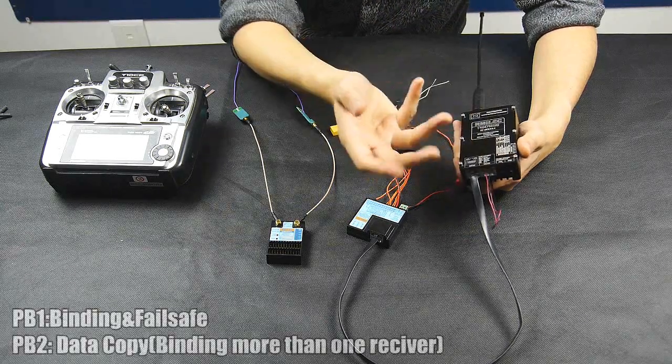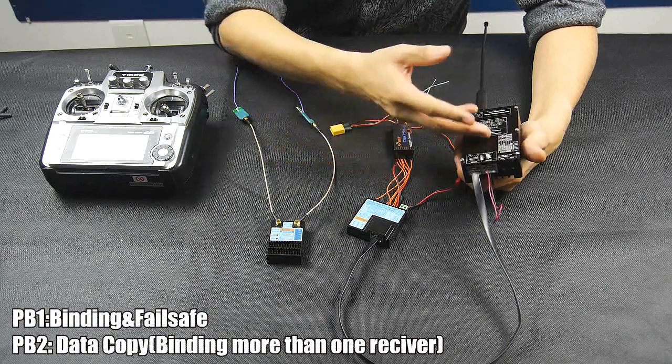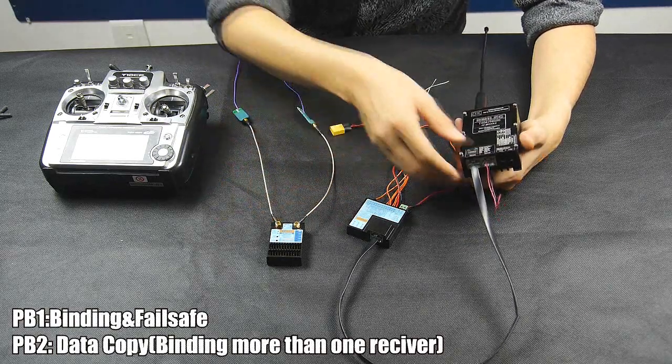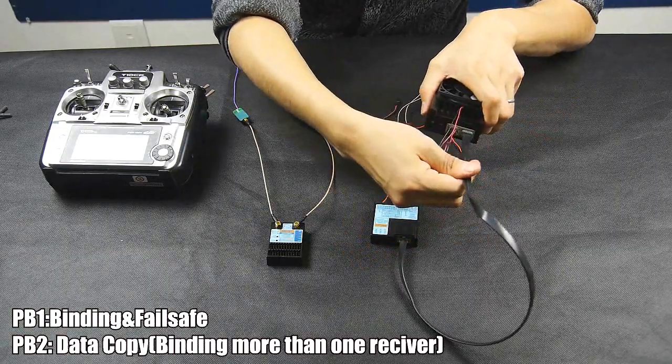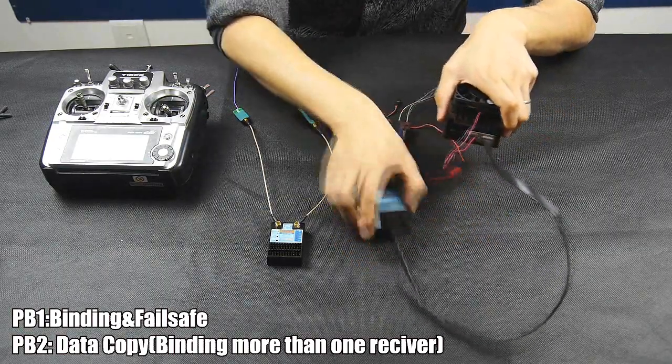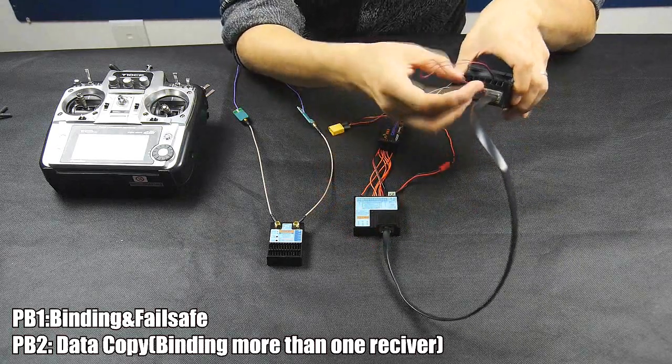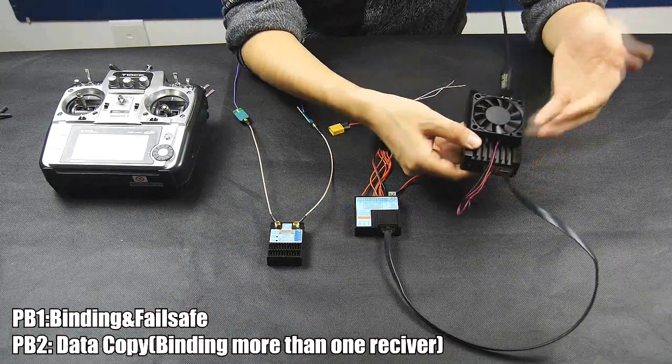And PB2 is for copying this data to a new receiver module. You can see one very thick wire to the adapter module, and here is also for powering the fan.